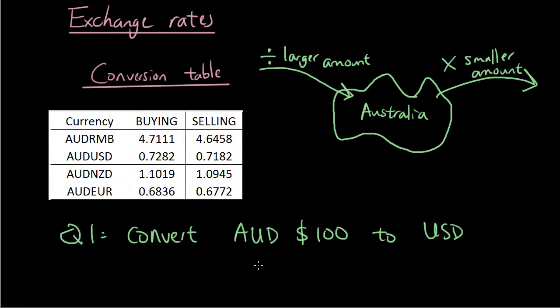So question one, convert $100 Australian to US dollars. So refer to this diagram. We're going from Australia to another country. So we're going to multiply by the smaller amount. So if you read the table, Australia to US is the second row here. And which of these two amounts is the smaller amount? This number is smaller, 0.7182, so you would go 100 multiplied by 0.7182, and that is going to equal $71.82. So that's question one completed.